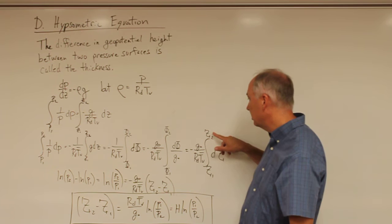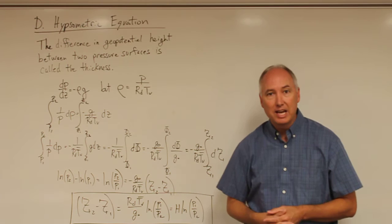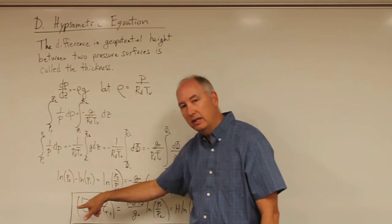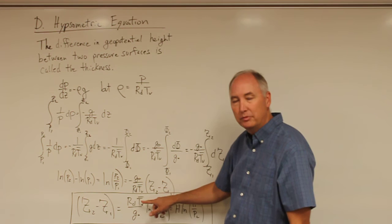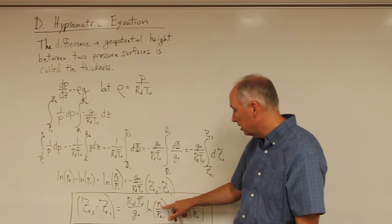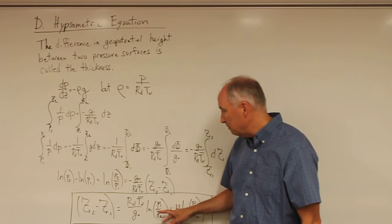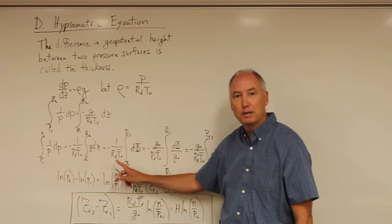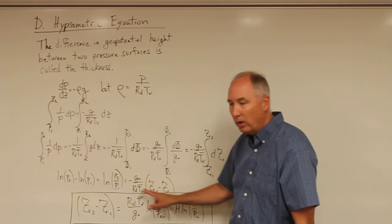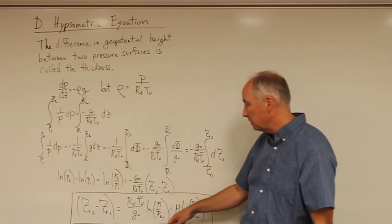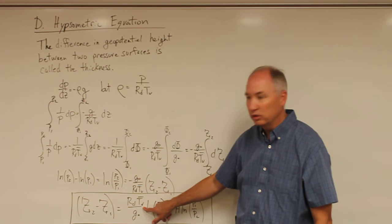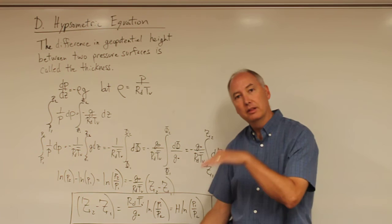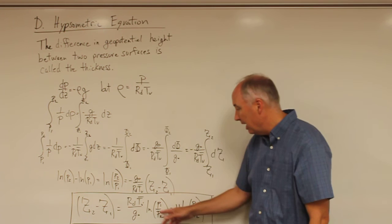The right-hand integral becomes simply the geopotential height at the upper surface minus the geopotential height at the lower surface — which is the thickness of the atmosphere. Rearranging for the thickness, the change in geopotential height equals r_d times T_v-bar divided by g0 times the natural logarithm of p1 over p2. Note that p1 and p2 have switched places because we absorbed the negative sign. The thickness between two pressure surfaces is primarily controlled by the average virtual temperature in that layer: a warmer layer is thicker, and a colder layer is more shallow.